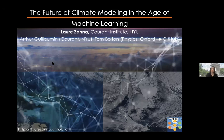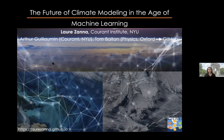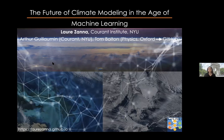Thanks a lot for the invite, and it's nice to see many names in the audience that used to be down the corridor from me. So definitely excited to be virtually back in Oxford physics. I'm going to talk about some work that we've been up to in my group, mostly on how we can use machine learning to represent processes in climate models that are not resolved. I'm going to concentrate on the ocean, because I'm a physical oceanographer by training. A lot of the hard work has been done and led by two people in my group: former PhD student Tom Bolton, who got his DPhil from Oxford physics, and a postdoc, Arthur Guillaume, at NYU Courant.